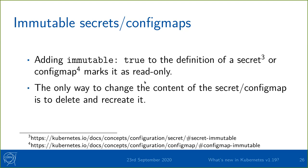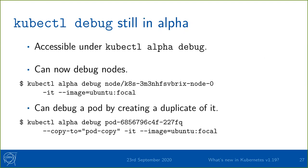Lastly, let's look at kubectl debug, which is still in alpha under 'kubectl alpha debug'. One thing you can do now is debug nodes: by running 'kubectl alpha debug node/<node-name>' with an image, it creates a pod with that image on that node in the host namespace. So if you think you have a connectivity problem on the node, you can create such a pod and ping from it — the ping runs as if from the node itself, without any container networking in between.